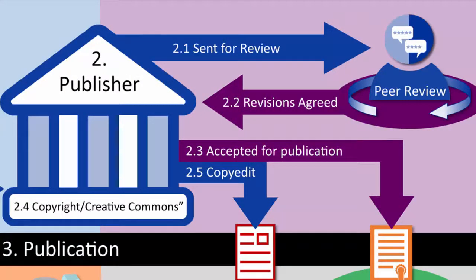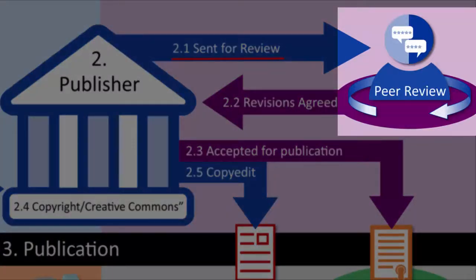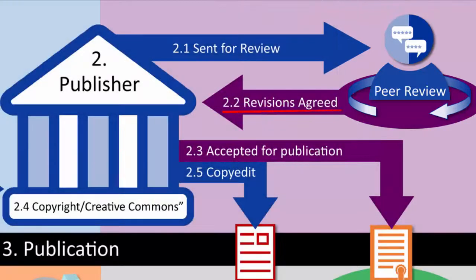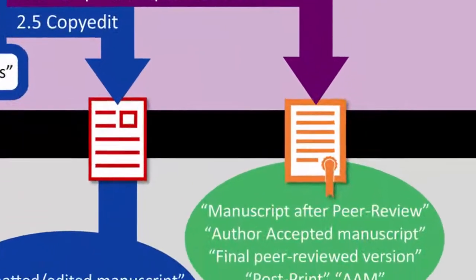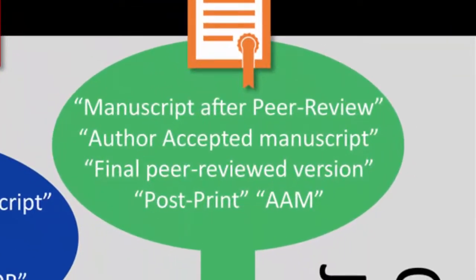Once your work has been submitted to a journal, the publisher will send it for review. The peer review process can be lengthy and may include back and forth between yourself and the reviewers as changes are made. When the revisions are agreed between yourself and the reviewers, your paper goes back to the publisher where it will then be accepted for publication. This version of the paper that has been accepted for publication then becomes the manuscript after peer review.